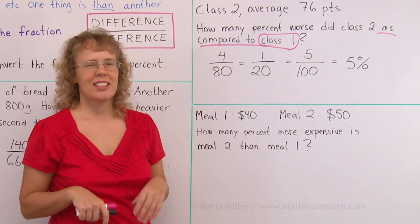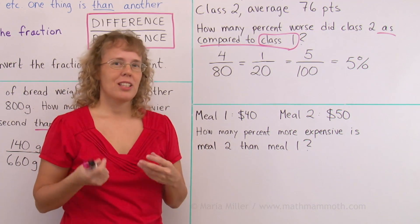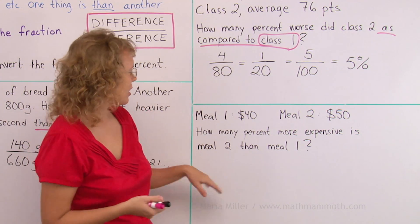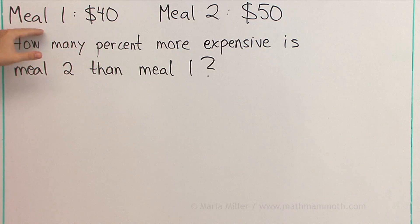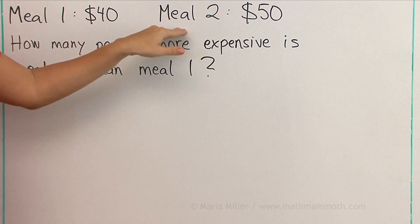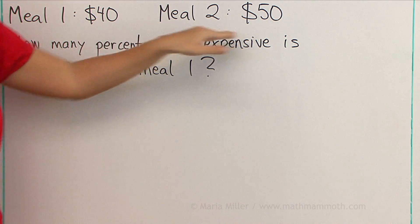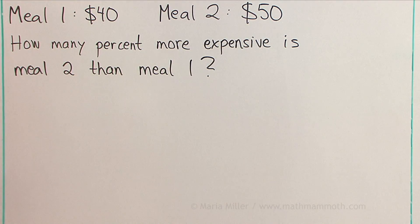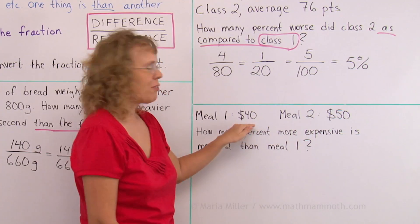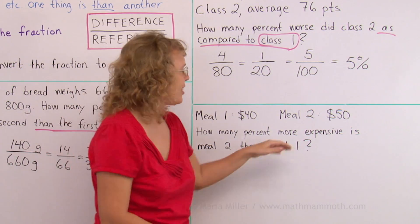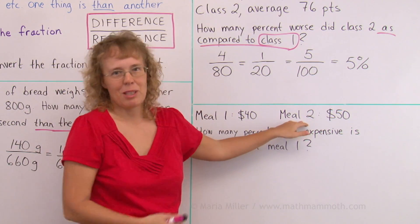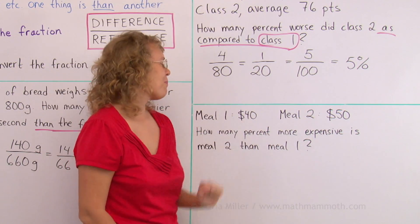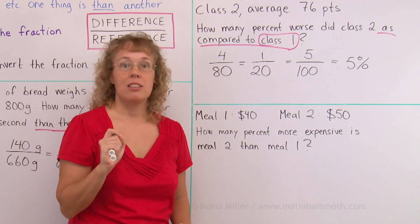Now over here we have two meals. Let's say you are walking on the road and looking at restaurant windows and you see advertised meal that is 40 dollars. Then you walk some further and you see in another restaurant another meal that is 50 dollars. And here's a question. How many percent more expensive is meal 2 than meal 1? You first found the cheaper one and then you go on and then you feel a little disappointed maybe that you found a more expensive meal. I want you to figure this out yourself.